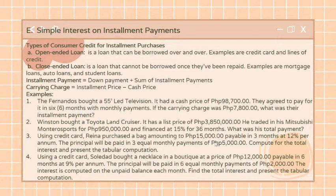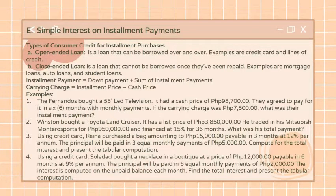There are two types of consumer credit for installment purposes: open-ended loan and close-ended loan. An open-ended loan is a loan that can be borrowed over and over. Credit cards and line of credit are common types of open-ended loans. These loans have a credit limit, and each time a borrower makes a purchase, the available credit decreases.